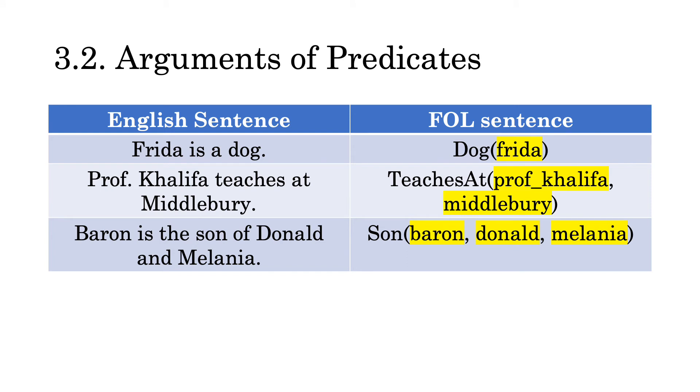The highlighted words are all individual constants. These are called the arguments of the predicate. Thus, Frida is an argument of the predicate dog. Professor Khalifa and Middlebury are arguments of the predicate teaches at. And Baron, Donald, and Melania are arguments of the predicate son.